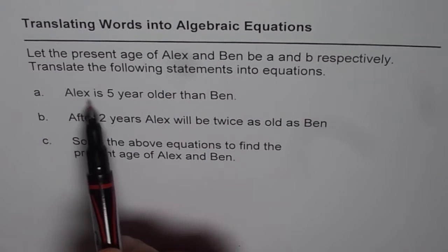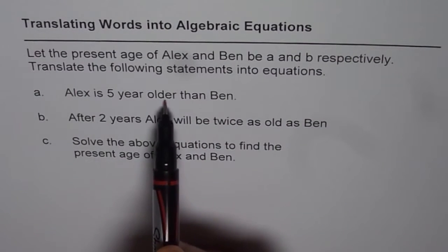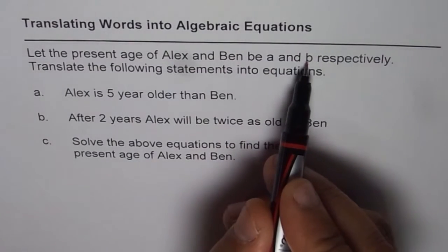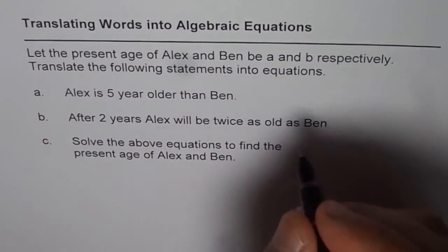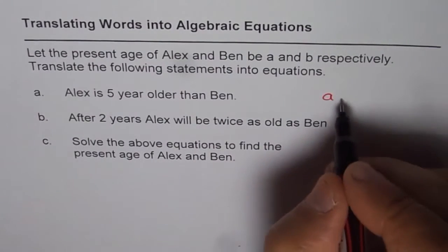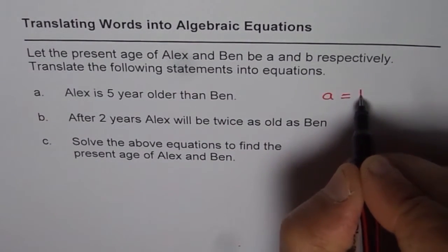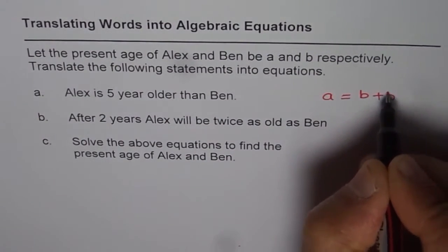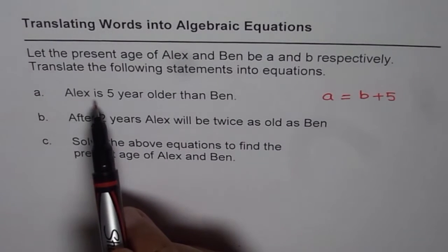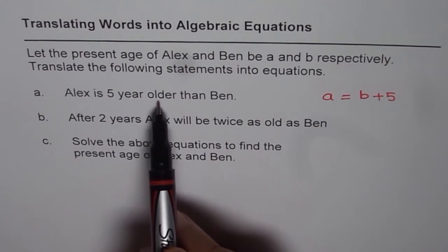The first one is, Alex is 5 years older than Ben. That means A is more than B by 5. So we can write this as an equation. This age of Alex is 5 more than B, which is B plus 5. That gives us an equation which is translation of the given statement. Alex is 5 years older than Ben.